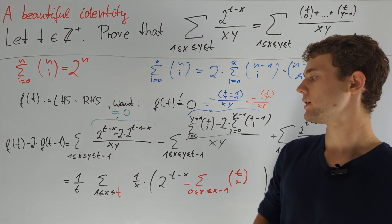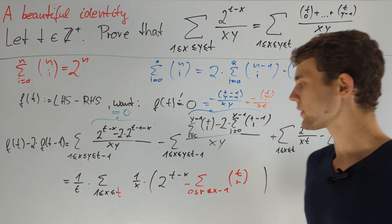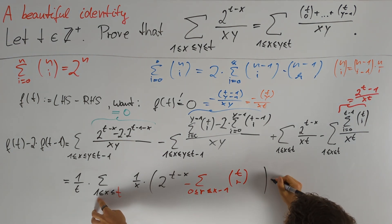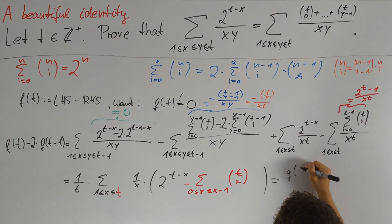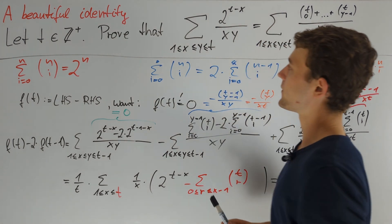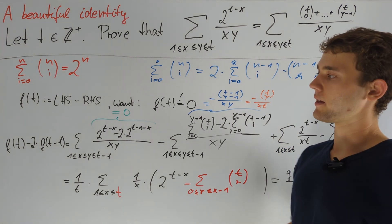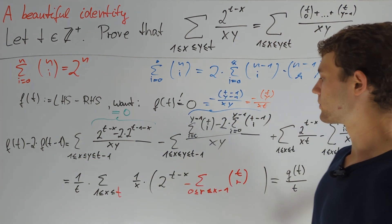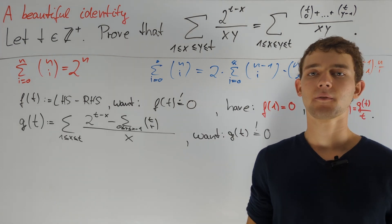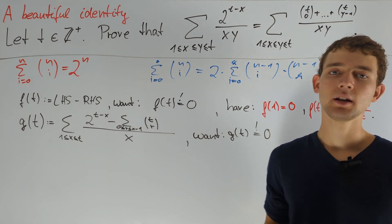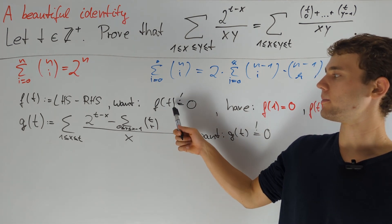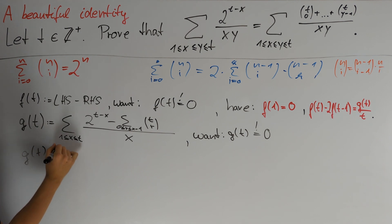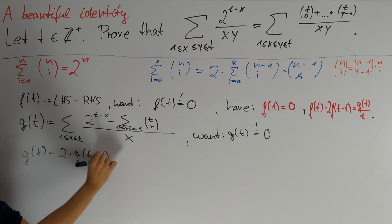For showing that f always equals 0, we need to prove that this expression is also equal to 0. We now have a new combinatorial identity to prove, so let us call this expression g(t), giving us f(t) − 2f(t−1) = g(t)/t. Note that f(1) = 1 − 1 = 0. Therefore, by induction, it is sufficient to show that this difference always equals 0, and so to finish our proof we will show that g(t) = 0. The reasons why proving g(t) = 0 are hard are very similar to before, so we finish again by considering g(t) − 2g(t−1).